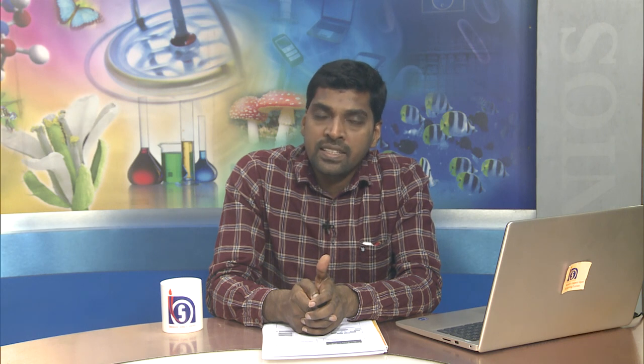If you go to any urban society in Delhi or Noida, you will find people from different parts of the country — from Odisha, West Bengal, Bihar, Tamil Nadu, or Kerala. So you will find both South Indian, East Indian, and West Indian cultures, and the dress patterns are also very different from each other. Urban areas also have a man-made environment — the environment is not natural as in rural areas. In urban society, there is higher mobility because of the employment avenues and education opportunities available, so people have higher mobility compared to rural areas.